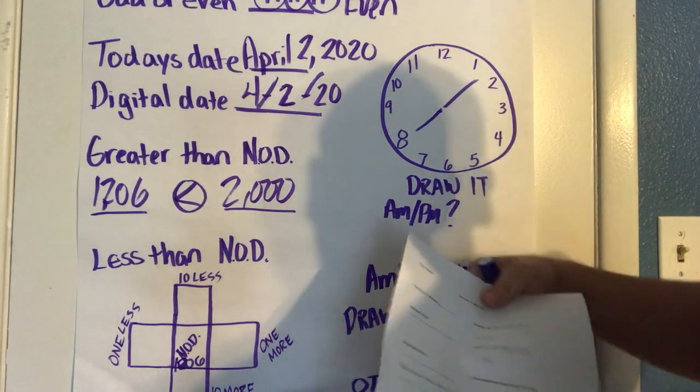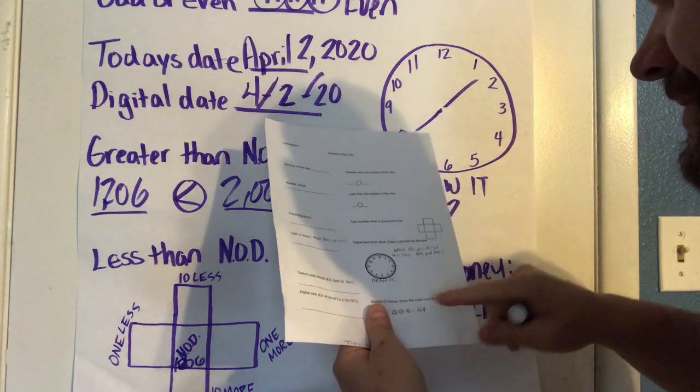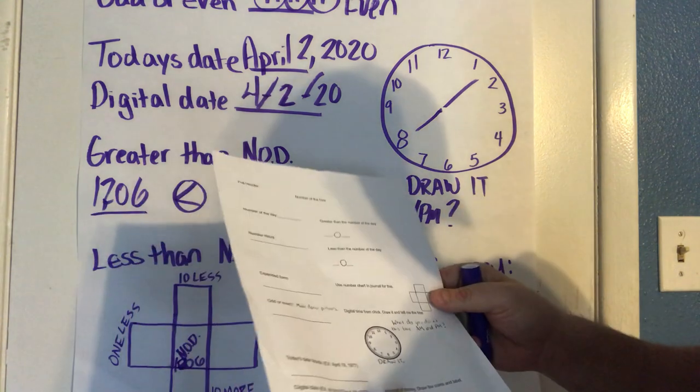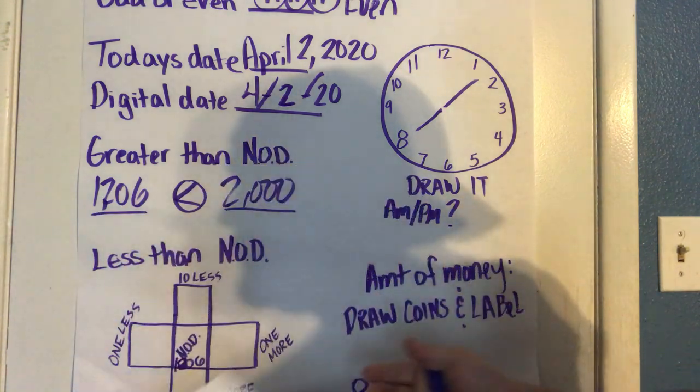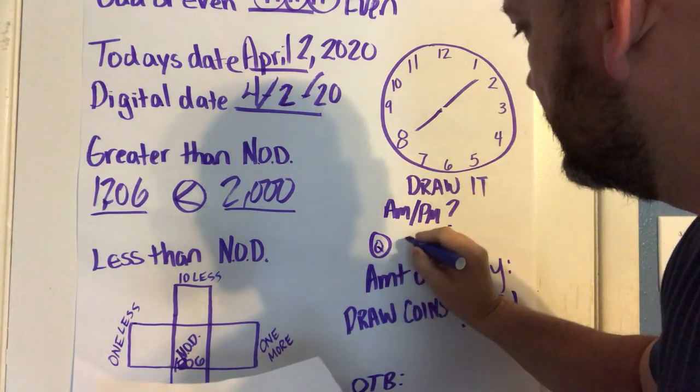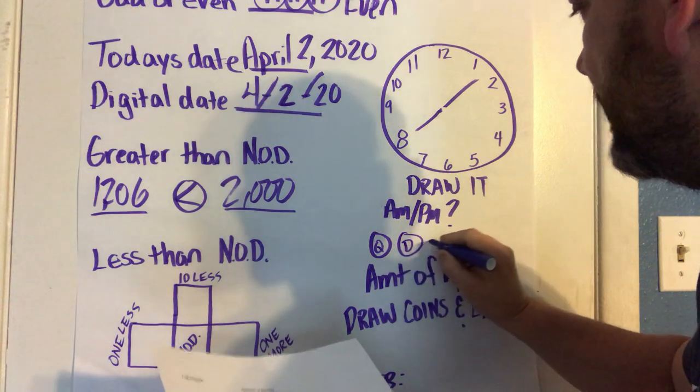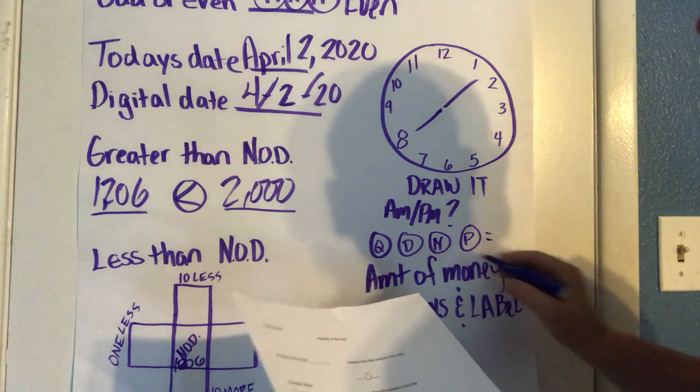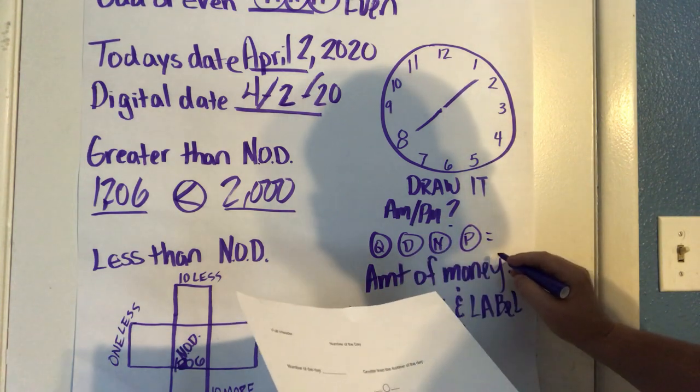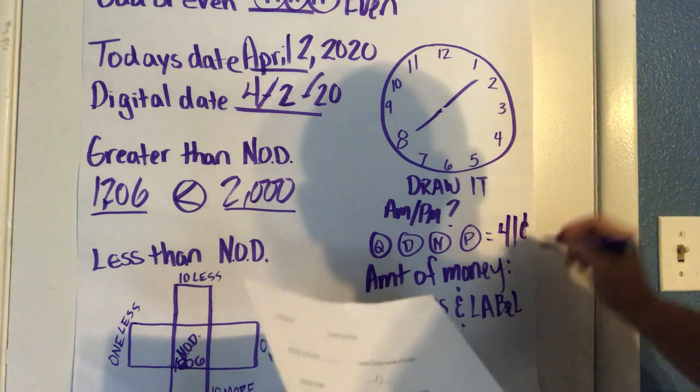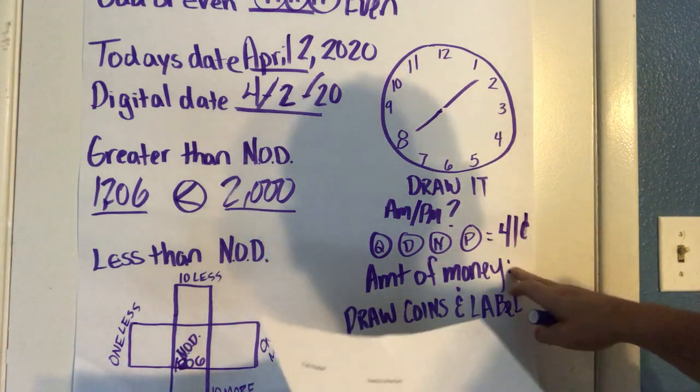Then the amount of money is also on the chart. Draw the coins and label. I showed you earlier the coins. At home you might could just use coins, you know, just like real coins. They would draw them like this: quarter, dime, nickel, penny. And then they would give me the total there, so 25, 35, 41, and they would give me that total for amount of money.